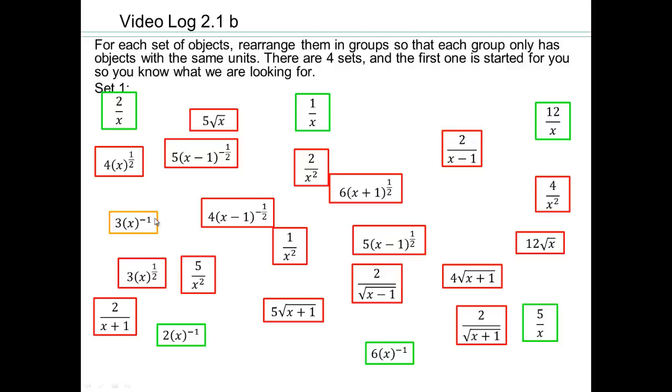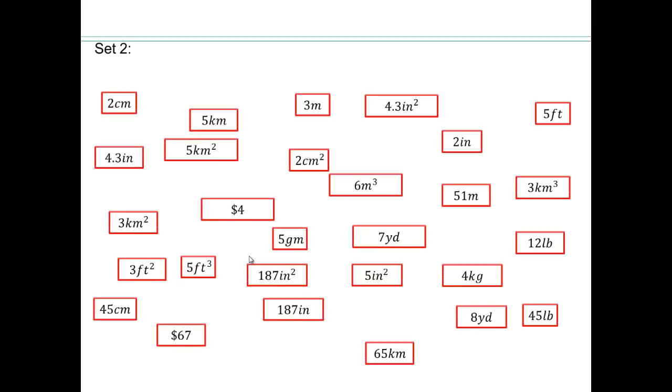Oh, here is one. 3x to the negative 1 will go with it. So all these highlighted green cards are one group. And they are in the same group because they have the same units. So look across all of these cards and see which cards go together in one group. There may be multiple groups in here. So go ahead and do that for this set. Do the same with the other sets that are coming up as well.